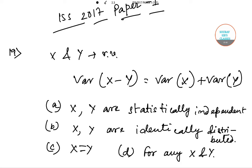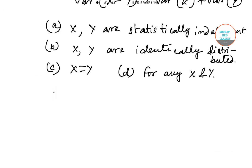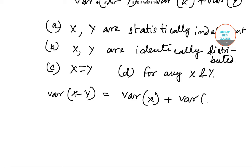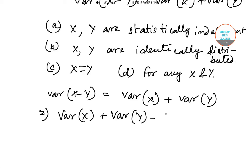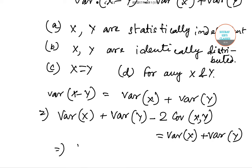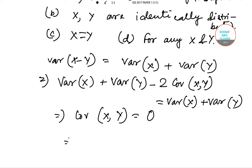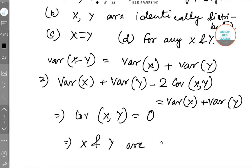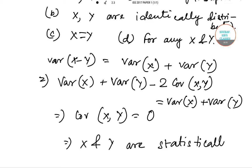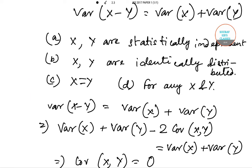Now let's see how we approach this question. We are given that Var(X − Y) = Var(X) + Var(Y). We can expand the left side as Var(X) + Var(Y) − 2·Cov(X, Y) = Var(X) + Var(Y), which gives us Cov(X, Y) = 0. This means X and Y are statistically independent, which is option A. So the correct answer is option A.